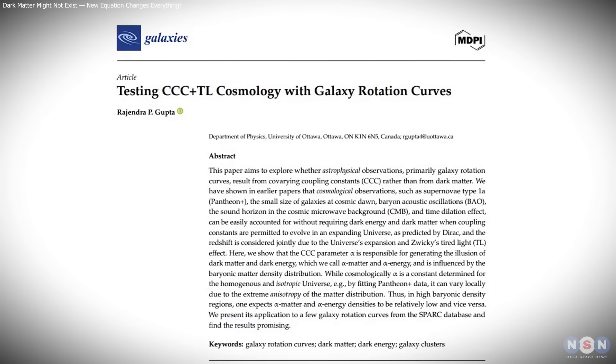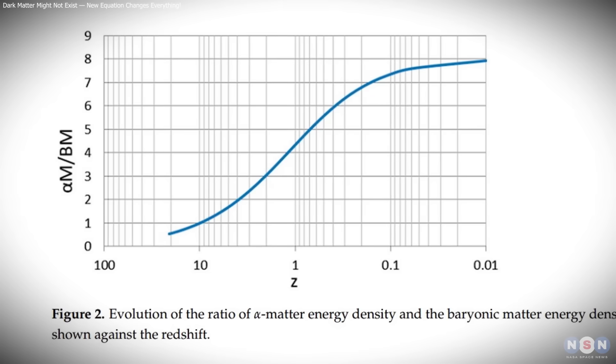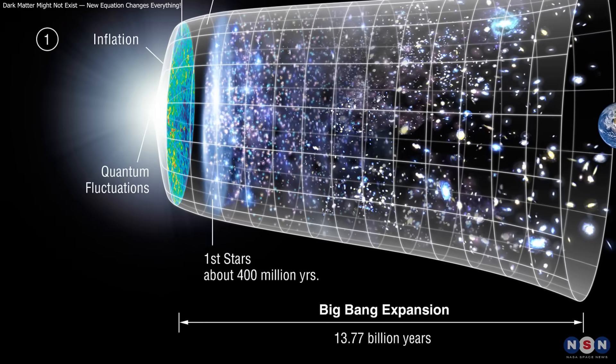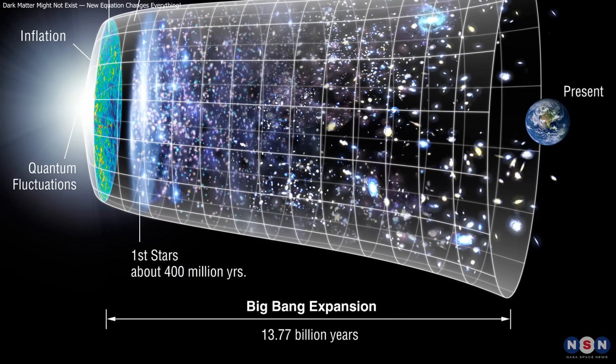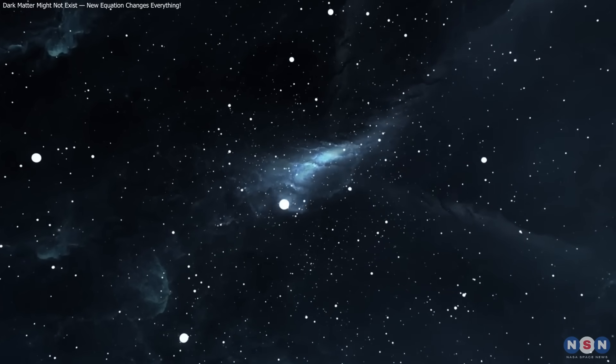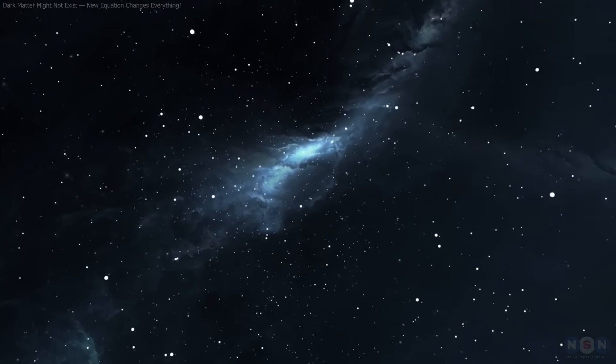Rajendra Gupta's model reimagines the cosmos as an evolving system where changing forces, not hidden matter, drive its behavior. If proven, it could overturn the foundation of modern cosmology and extend the universe's age. Whether it stands or falls, it reminds us that even our most trusted cosmic truths are still open to question.